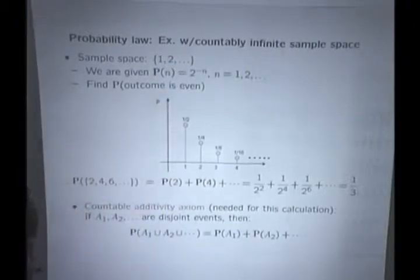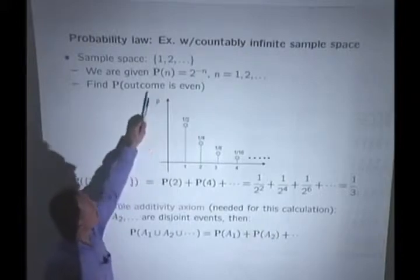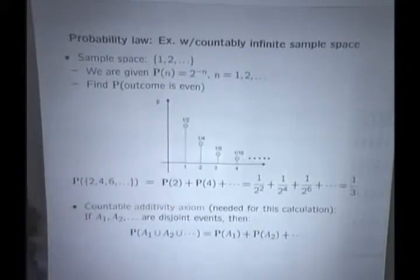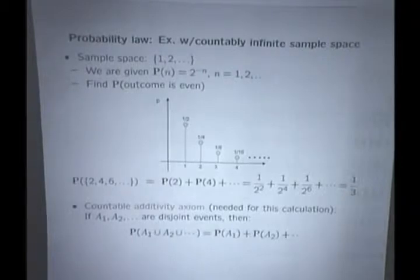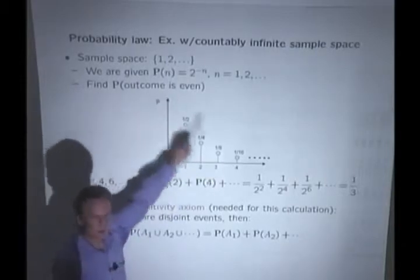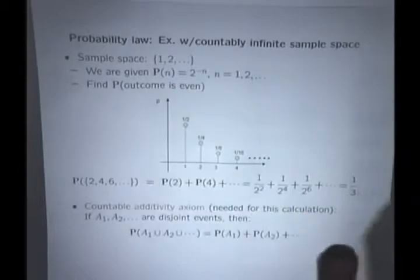Somebody tells you some information about the probability law. The probability that you have to wait for n flips is equal to 2 to the minus n. Where did this come from? That's a separate story. Somebody tells this to us and those probabilities are plotted here as a function of n.